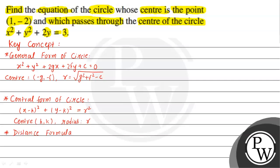Suppose two points have coordinates A(x1, y1) and B(x2, y2). If we want to find the distance between A and B, this distance is given by the square root of (x2 − x1) squared plus (y2 − y1) squared.